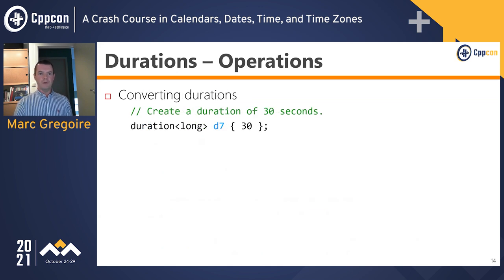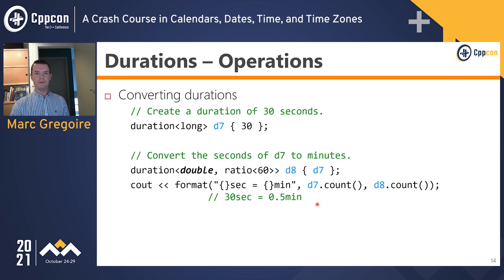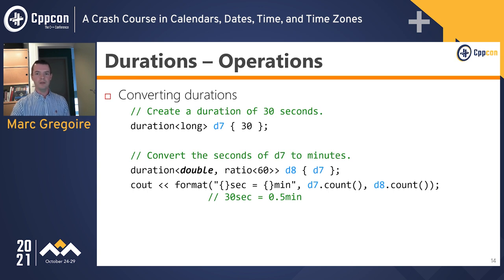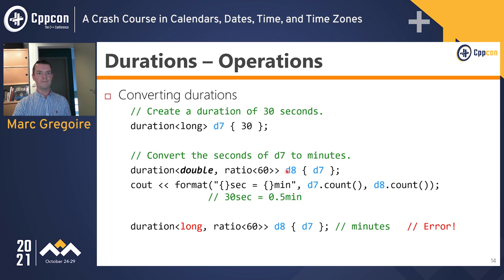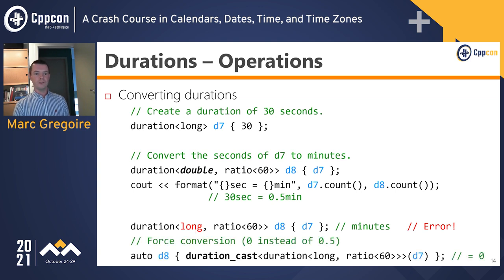Durations can be converted from one type to another. Converting d7 (30 seconds) to minutes uses ratio<60> and requires a double because the result may be non-integral; using an integral type causes a compilation error. If you still want to convert seconds to minutes and store as an integral value, you can force the conversion using duration_cast — but the result will be 0 rather than 0.5.